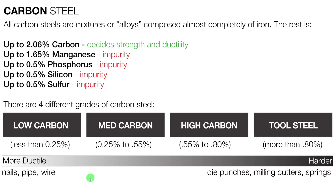Over here you can see that there's a gradient. At the bottom you have the soft parts — nails, pipe, and wire — they're very ductile but not very hard. Up at the top you have die punches, milling cutters, springs, and injection molding tools, just like tool steel, which is used to make injection molding tools. It has more than 0.8% carbon, which means it's a very hard material with less iron in it.